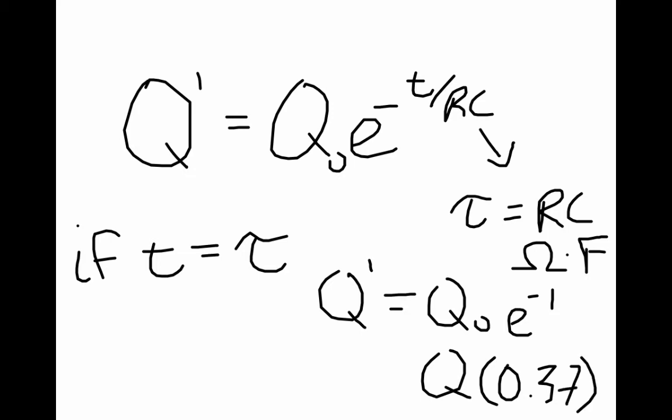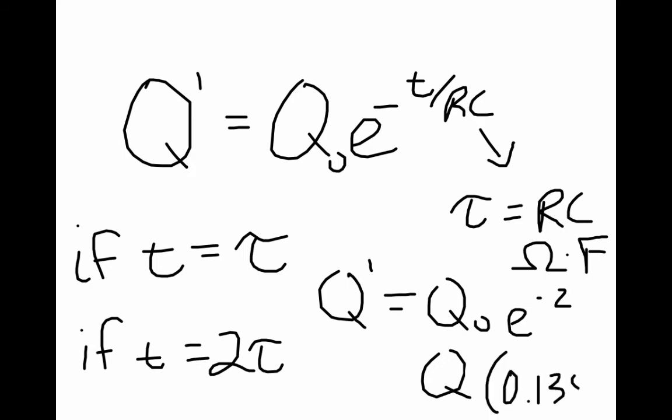So at one time constant, we've already decreased the amount of charge on the capacitor to 37% of the original charge. So what if T equals 2 tau? If T equals 2 tau, E is not raised to the negative first, now it's raised to the negative second, and e to the minus 2 gives you 0.135.